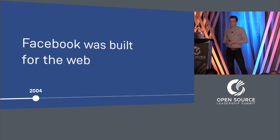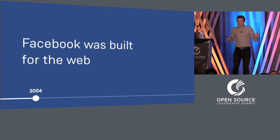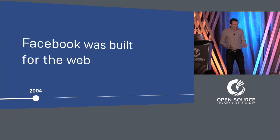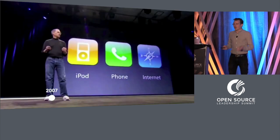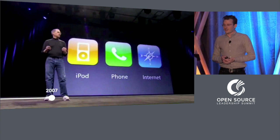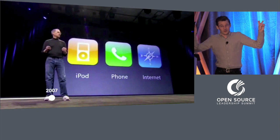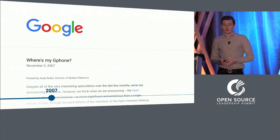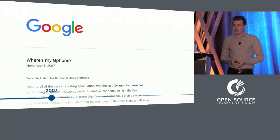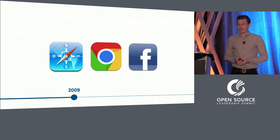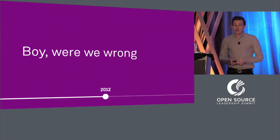Facebook was built for the web. In fact, even our native mobile apps were really just thin wrappers around our Facebook mobile website. We bet big on the web. I remember when Steve Jobs introduced the iPhone in 2007 — he called it a breakthrough internet communication device, and he made sure that Safari, the best web browser in the world, was running on iPhone. Then Google, the biggest name in web and the creators of Chrome, responded with Android later that same year. And we thought these two are going to compete on having the best mobile web browsers, and we're going to build the best mobile web experience. Boy, were we wrong.